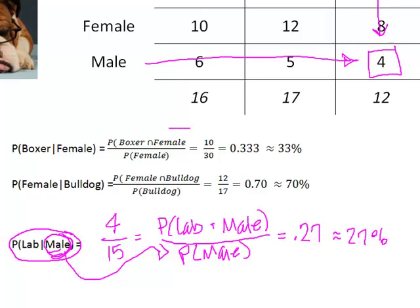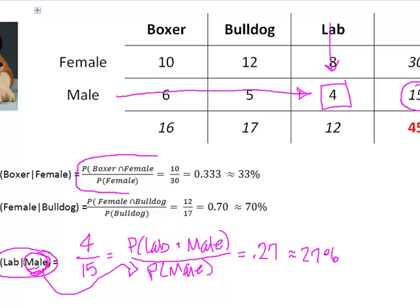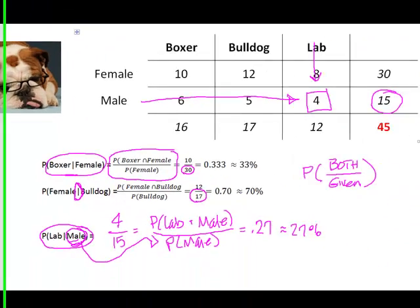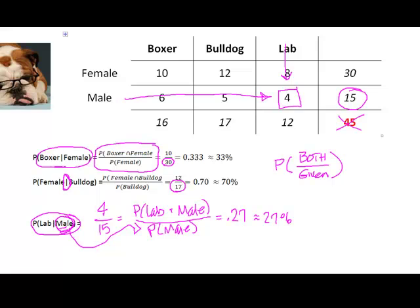Always remember that a conditional probability is always the probability of both divided by the probability of the given. The given is what's behind the fence, and in a conditional probability, your denominator — the amount from which you select — is always going to be smaller than the total. Hope this helps. Talk to you soon. Bye.